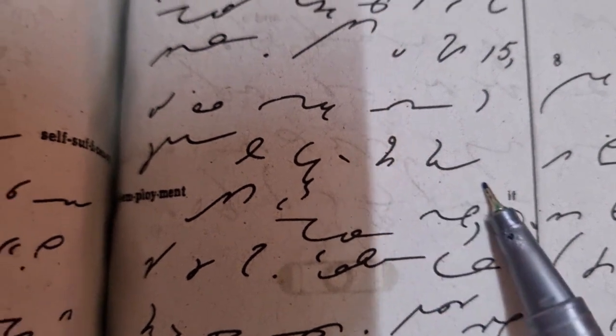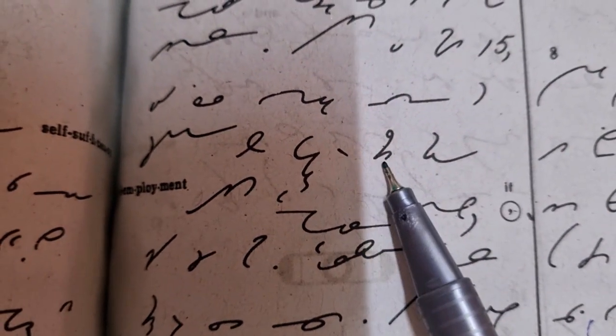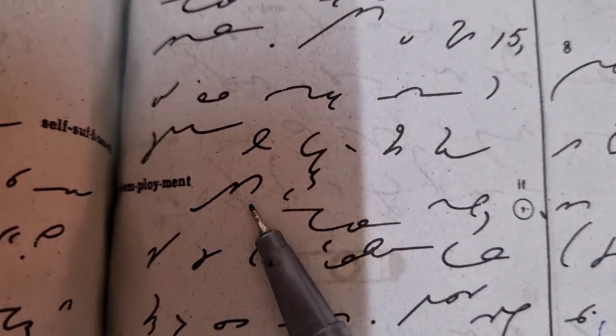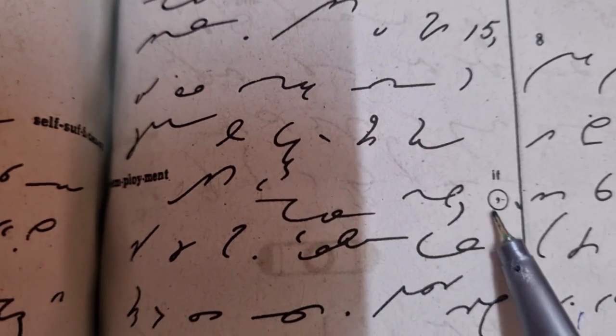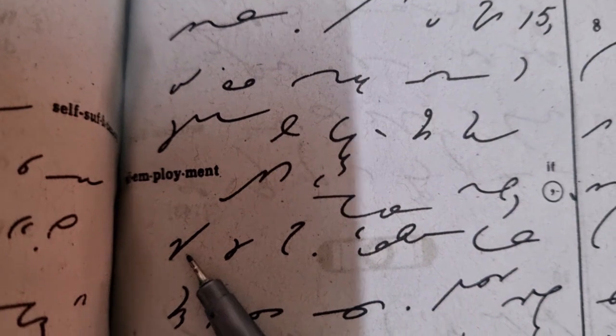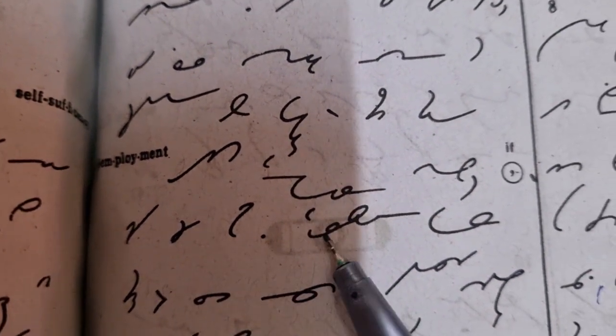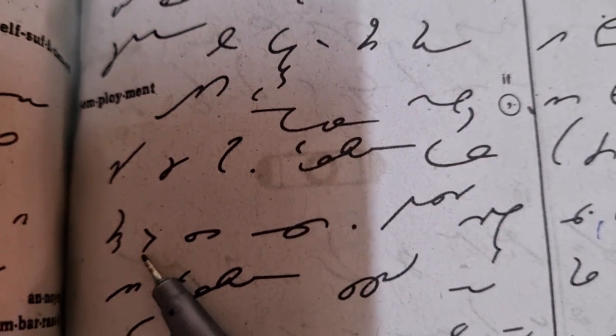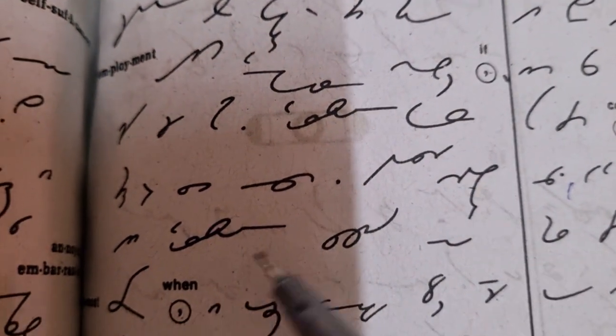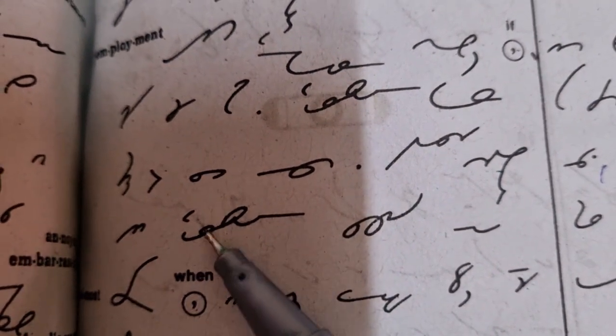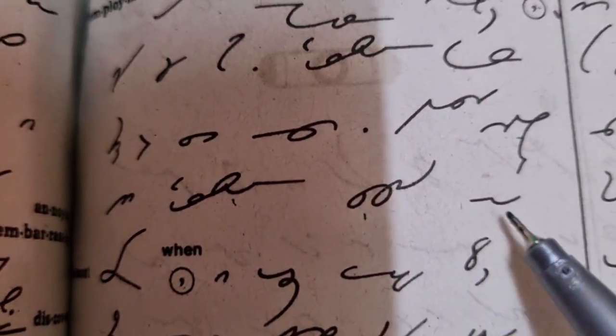If you fall into this self-employment classification, you should set up a self-retirement plan for yourself. When you make a direct contribution to your self-retirement account in our bank, you receive almost 8 percent interest.